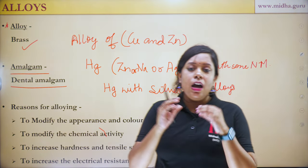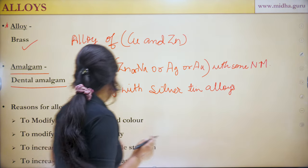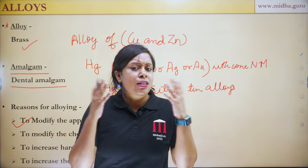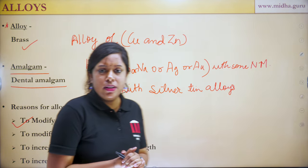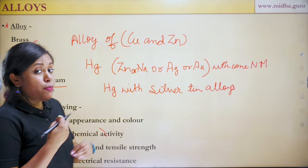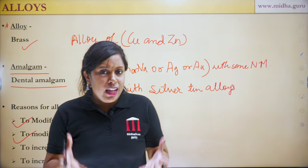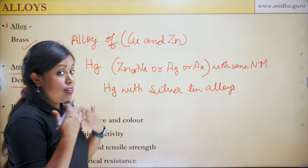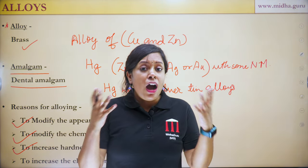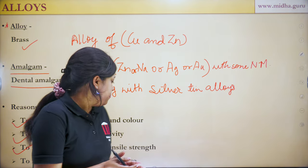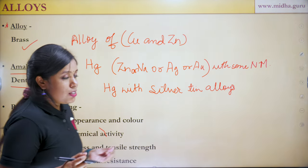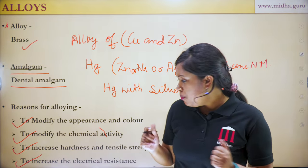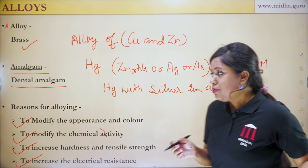The reasons for making alloys are: first, to modify the appearance and color — steel has a shiny surface but iron does not; second, to modify chemical activity — sodium amalgam is less reactive than sodium metal; third, to increase hardness and tensile strength — brass is harder than copper; fourth, to increase electrical resistance — nichrome has higher resistance than copper.